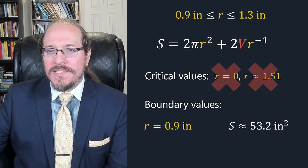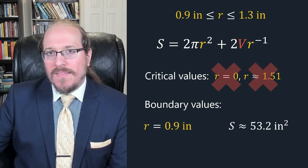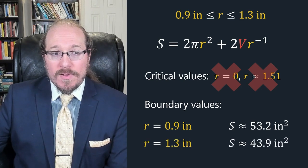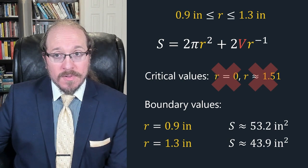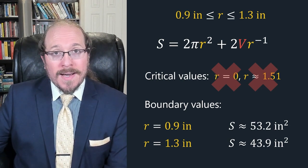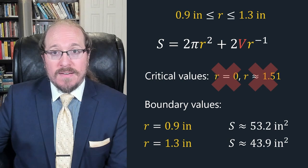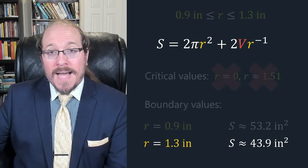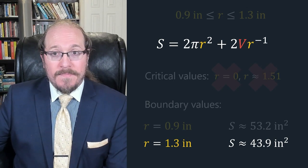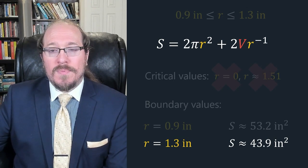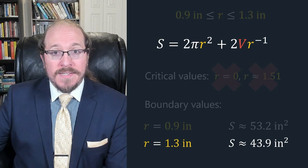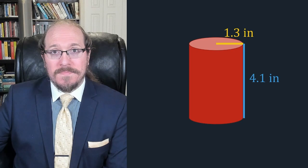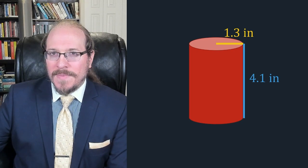If we plug in 0.9 inches, we get a surface area of about 53.2 square inches. And if we plug in 1.3 inches for the radius, we get about 43.9 square inches for the surface area. Since 43.9 is the smaller value, that must be our absolute minimum surface area, which leads to a best possible radius of 1.3 inches, the actual standard radius of a soda can in the United States. Think about that the next time you get thirsty.